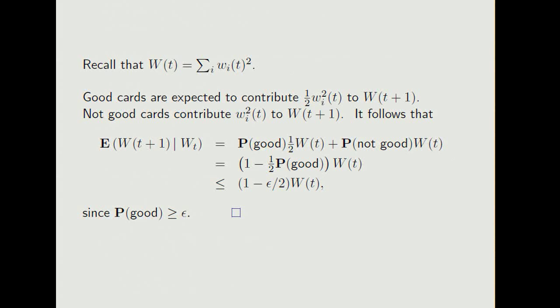But we're assuming that a proportion, at least epsilon, of the cards are not queried. Hence, a proportion epsilon of the cards are covered, which means the probability of being good is at least epsilon. So we get that the expected sum of squares at time t plus 1 is at most 1 minus epsilon over 2, times the value at time t.